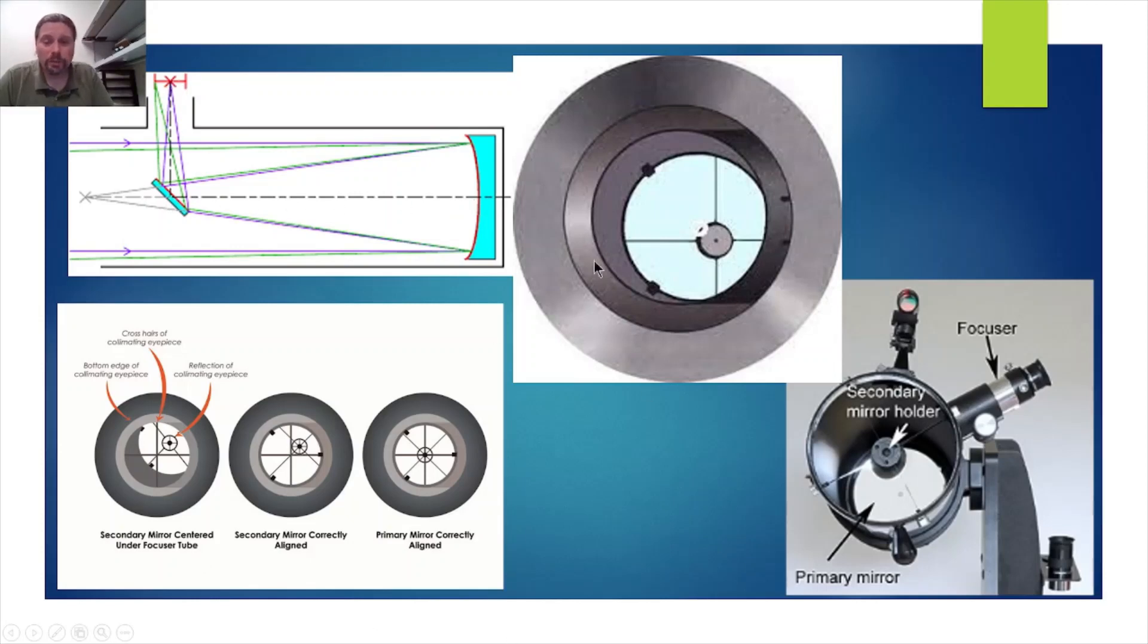So when you look at your telescope, it'll look misaligned oftentimes because it gets jostled. And this is what you might see looking down the draw tube. First, you'll adjust your secondary mirror, and then your primary mirror. Your optics will then be aligned.